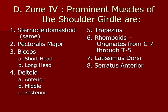Other extremely important muscles of the shoulder include the sternocleidomastoid, pectoralis major, bicep, deltoid, all three parts of the trapezius, the rhomboids muscle, the latissimus dorsi, and serratus anterior.